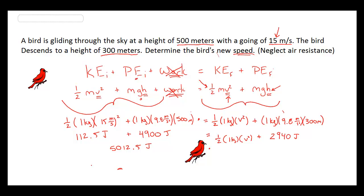Once we set the problem up, what we end up having is 1 half times 1. I made 1 as the mass just for the sake of it. Times 15 squared plus the amount of joules we get out of potential energy, which is 1 times 9.8 times 500, which gave us 4,900. So the total amount of initial energy I have is 5,012.5 joules.